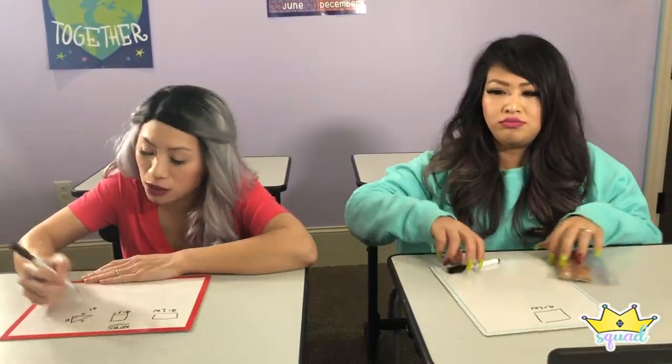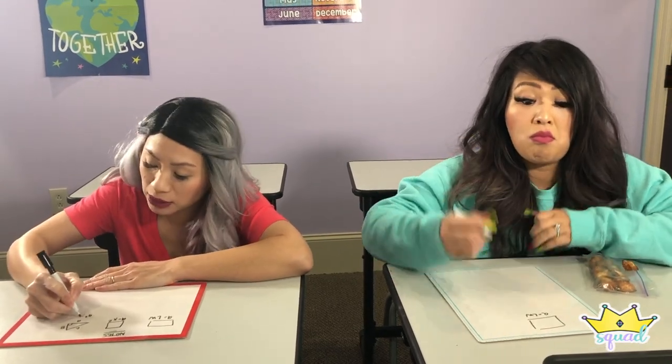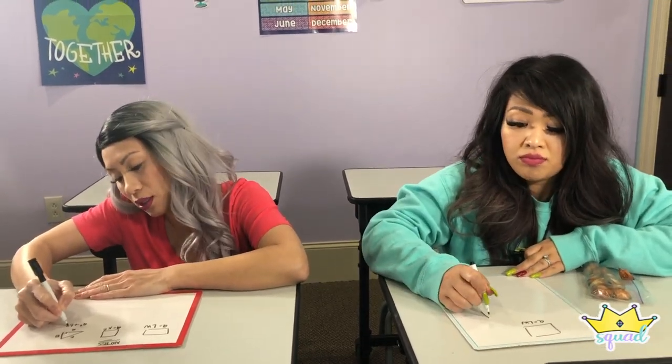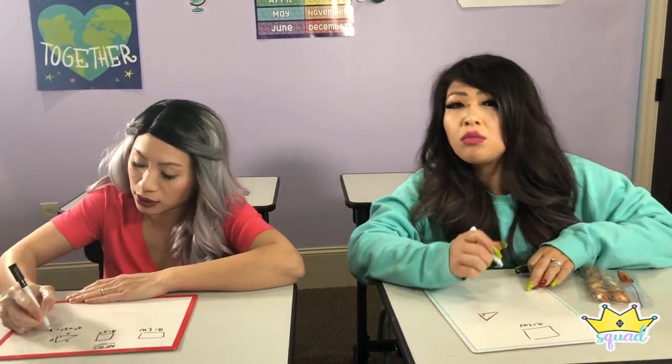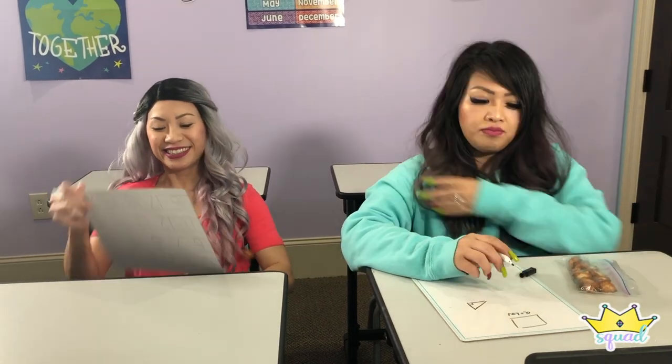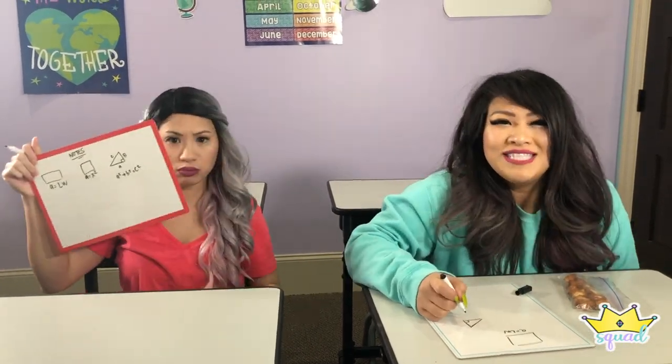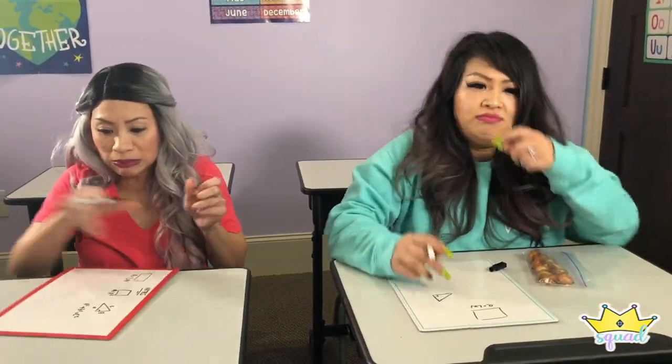I hope you guys are taking notes and paying very close attention. Again, right angle triangle: a squared plus b squared equals c squared. This is very tricky, so I hope you are paying attention.